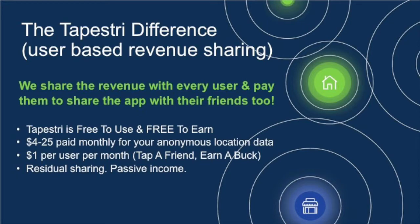After all, it's your data and you should get paid for it. They're your friends and we want to reward you for sharing. Tapestry is free to use. The app monetizes your data and you get paid four to twenty-five dollars monthly for your anonymous location data. This is not your personal information — this is anonymous device location data. You can passively share and create residual income with Tapestry.